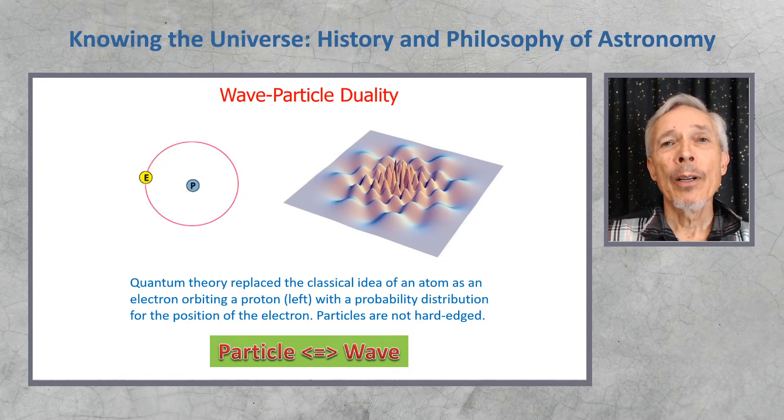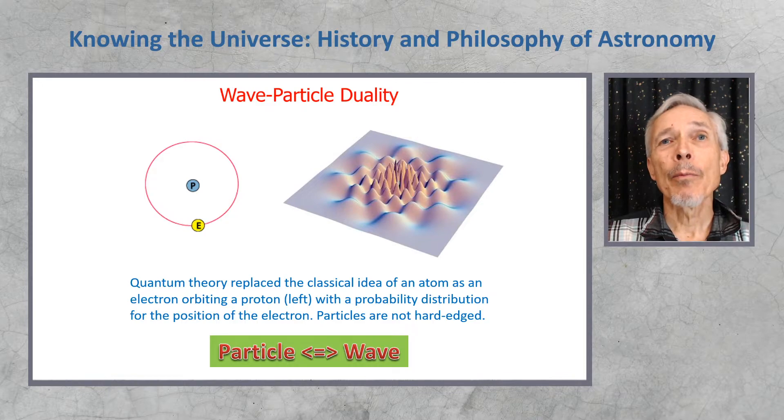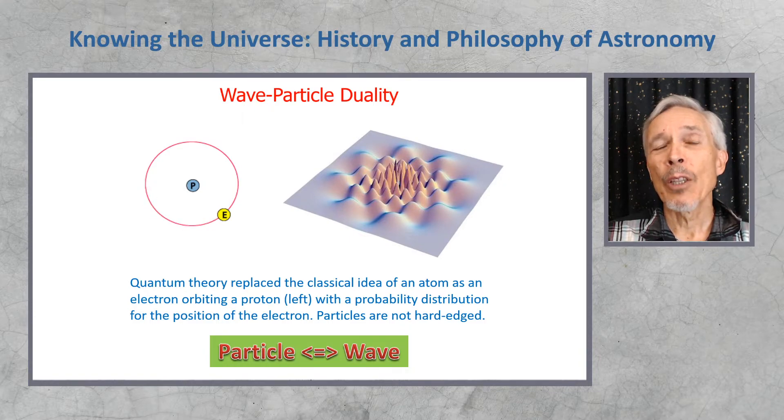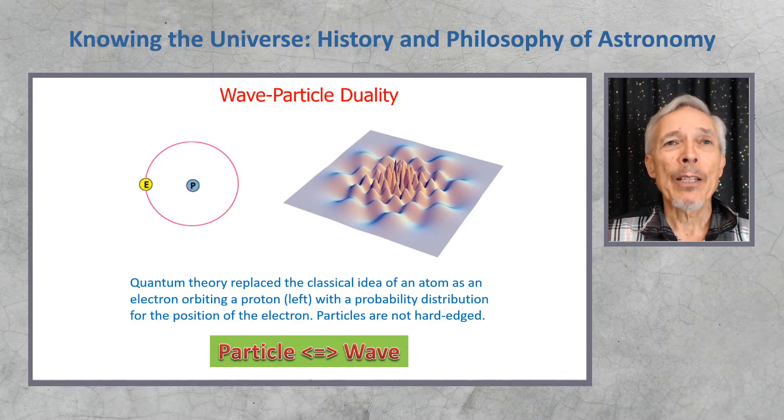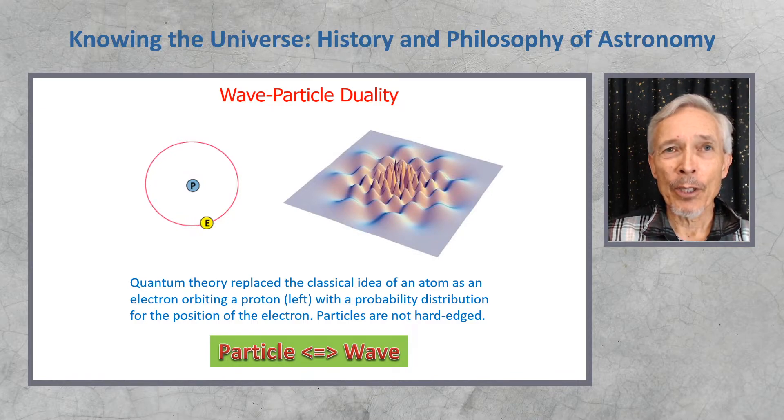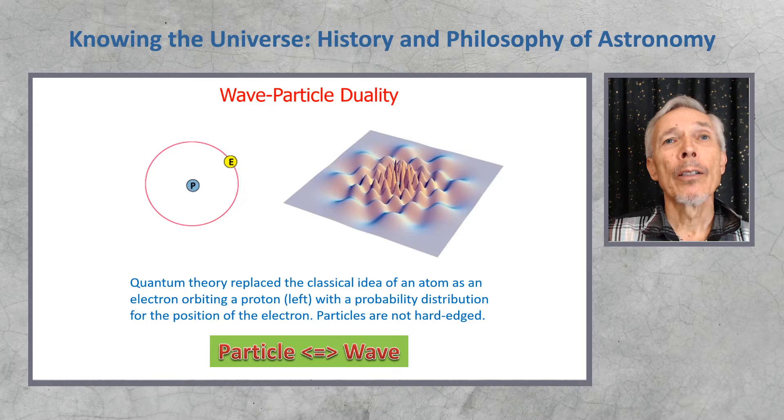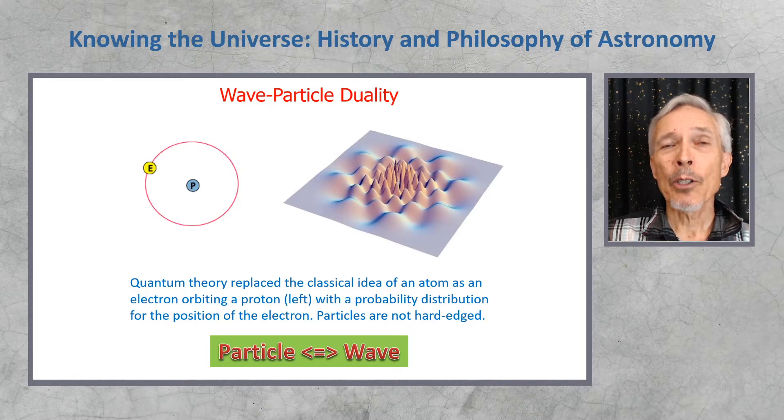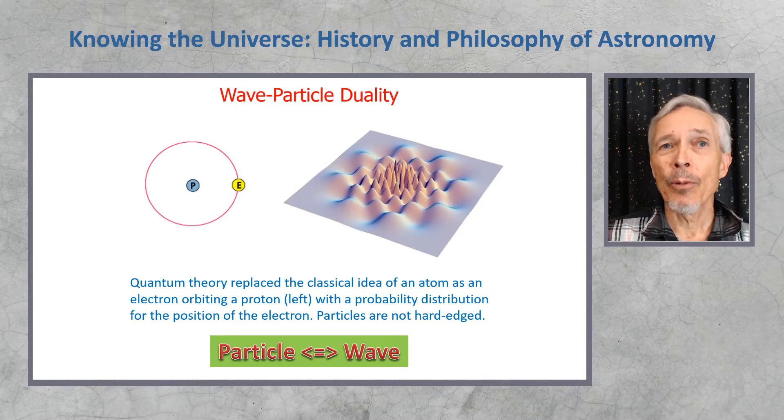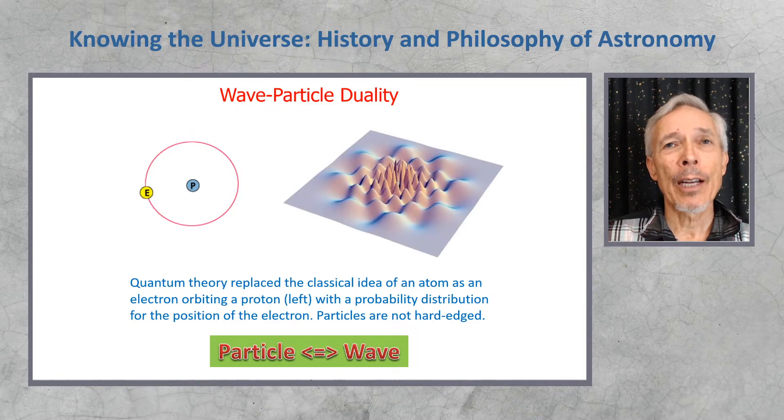Also in this time, we realize that waves and particles are really versions of the same thing. So quantum theory replaced the classical idea of the atom with the solar system model, which was an electron orbiting a proton. That's a very familiar model, like a solar system, but it turns out to be wrong. So the picture on the left is wrong, and the picture on the right is more accurate. It's a probability distribution, where we can't say with certainty where the electron is. We can just say with some probability where it might be distributed in space.